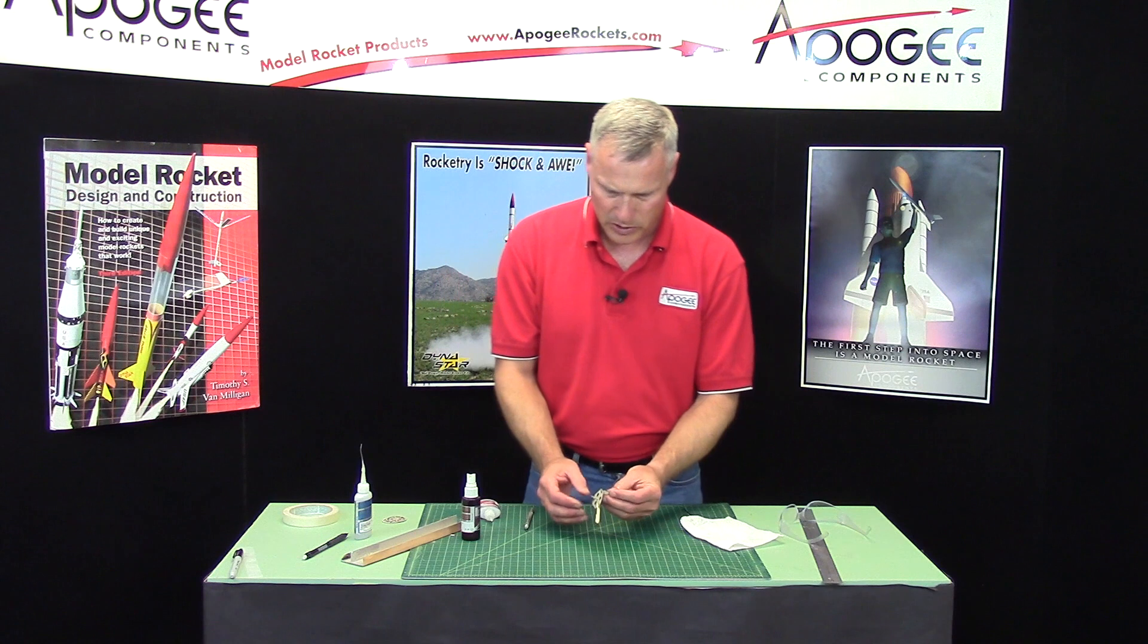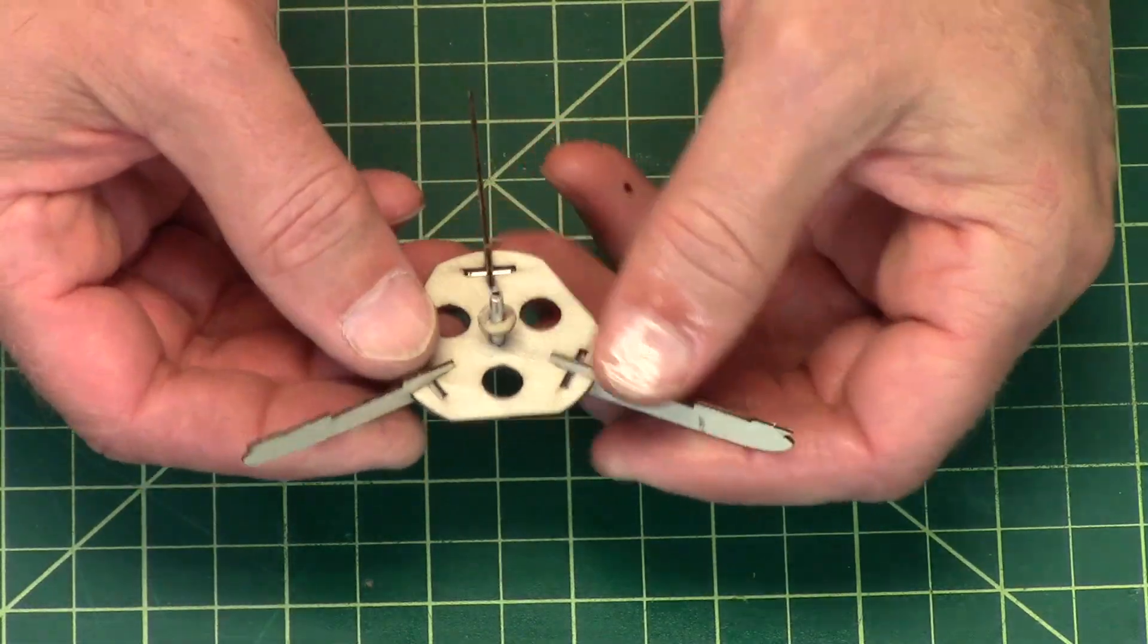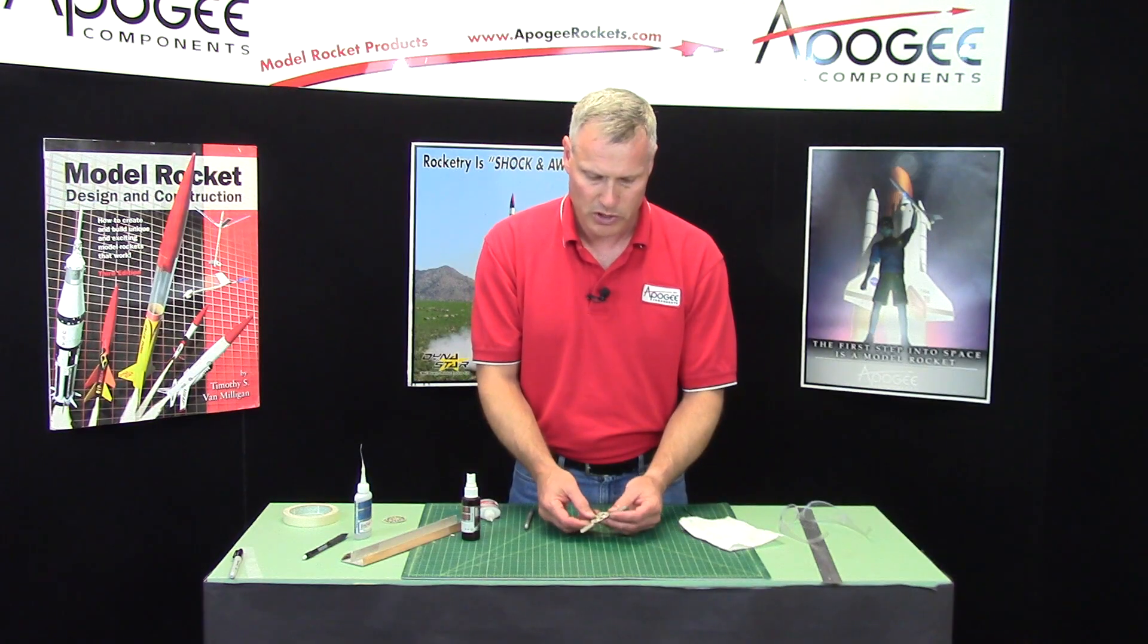All right. So our hub is now basically complete. And in the next step, we'll go ahead and start assembling the nose cone.